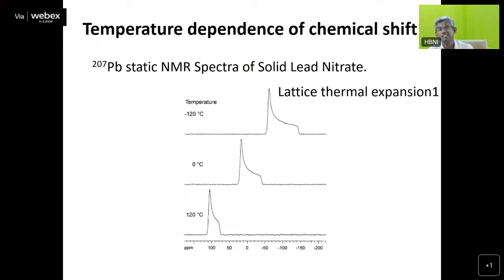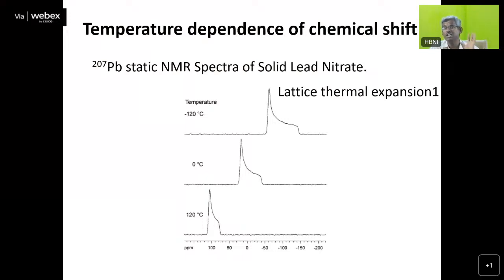But in the case of a solid, even if there is no structural change with temperature, we can have a change in line shape. A typical example is lead NMR — Pb-207. If you take sodium lead nitrate, put it in an NMR rotor, and subject it to NMR experiments, you get a lead-207 NMR peak. In the crystal structure of Pb(NO3)2 there is only one type of lead, so you get a single peak. But if you do static NMR as a function of temperature — at 120°C, at 0°C, and at minus 120°C — you see a significant change in line shape. We are not doing magic angle spinning here.